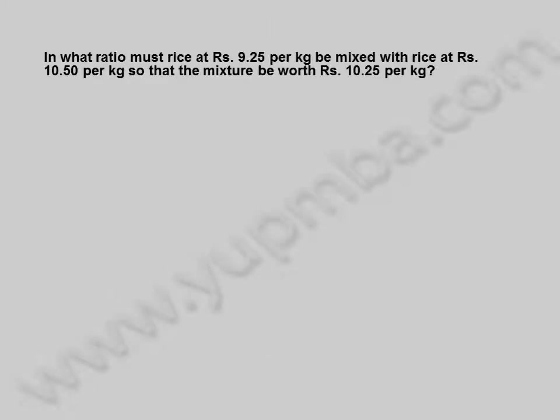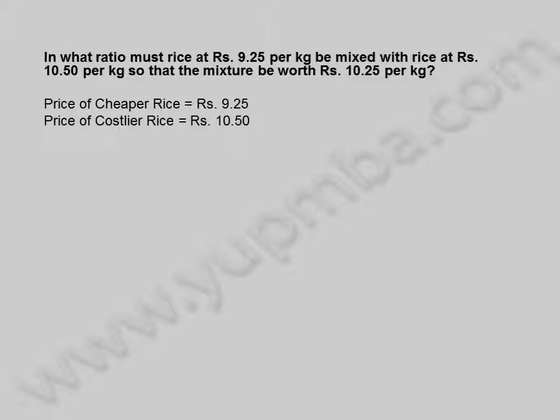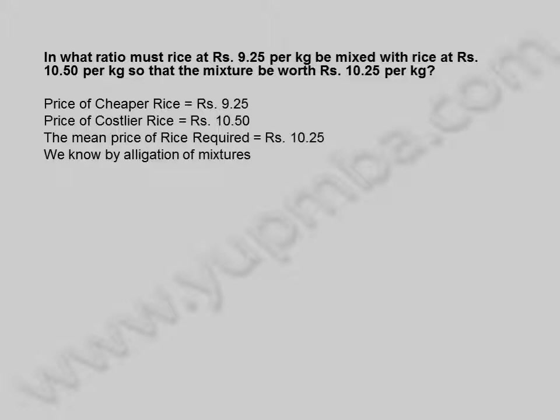In what ratio must rice at ₹9.25 per kilogram be mixed with rice at ₹10.50 per kilogram so that the mixture be worth ₹10.25 per kilogram? Price of cheaper rice is equal to ₹9.25 rupees. Price of costier rice is equal to ₹10.50 rupees. The mean price of rice required is equal to ₹10.25 rupees. We know by allegation of mixtures,